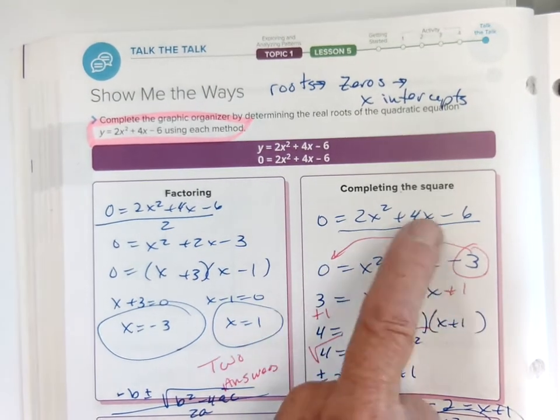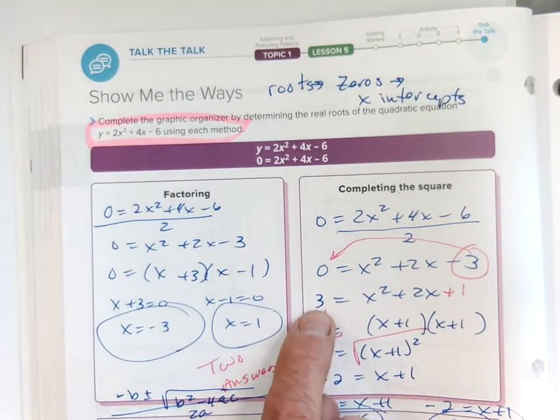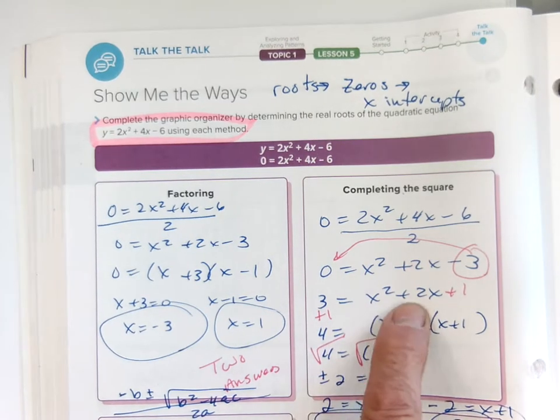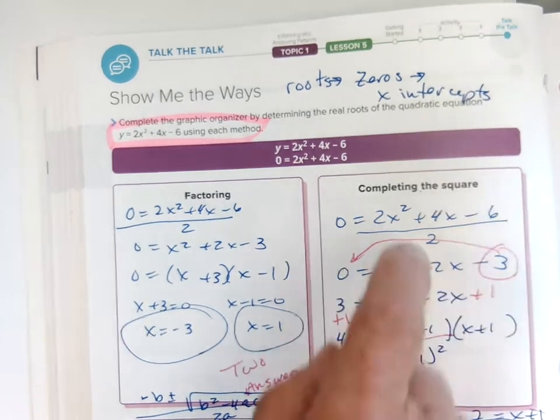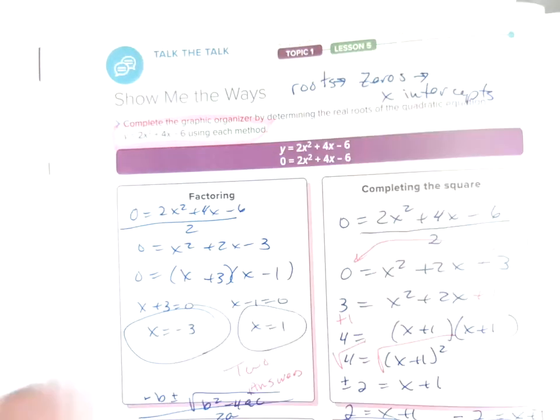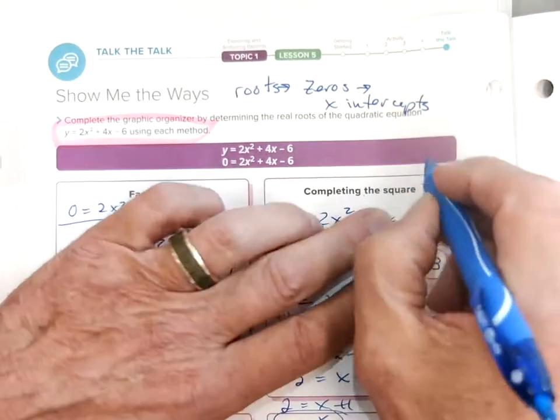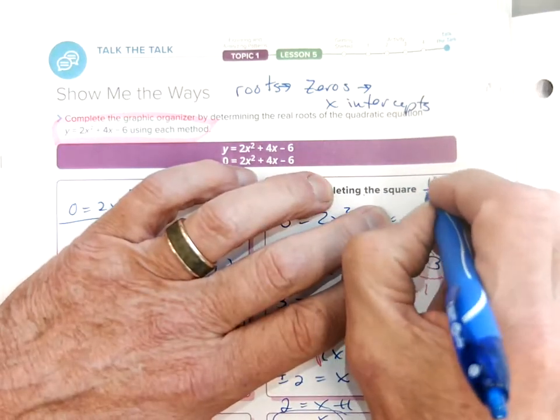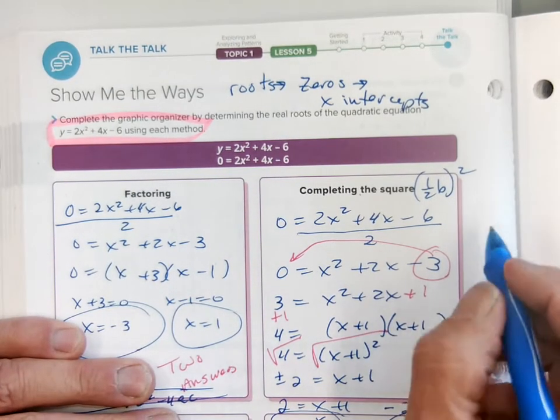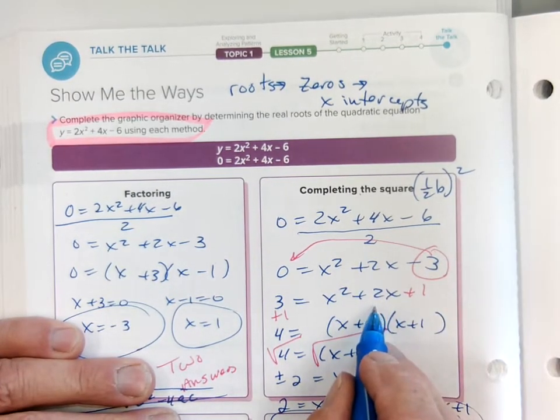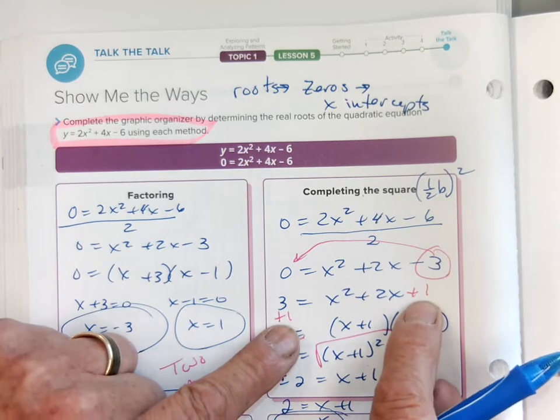I added 3 to both sides, bringing c over. The technique is to take half of this number and square it. Half of two is one, and one squared is one. I'm taking (½b)² where b is 2, so (½ × 2)² = 1. I add one to both sides to keep it balanced.